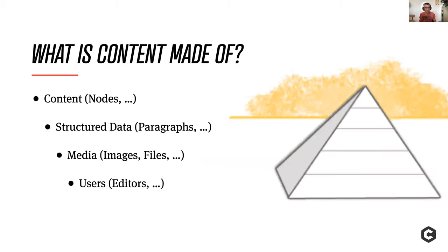What is content made of? When we think of content we mostly think about a node that the user views on a website. This content, this node, is actually built of many different pieces — it's constructed of structured data. This can be paragraphs, field collections, or what you might call utility nodes, whose only purpose is to enrich a different node.